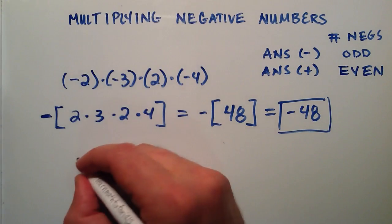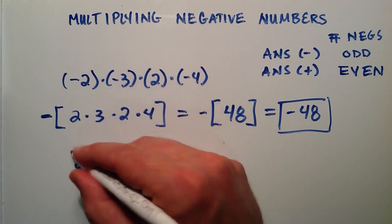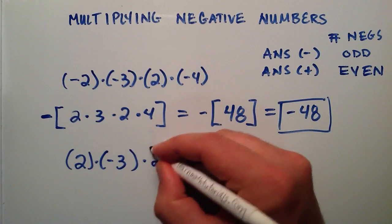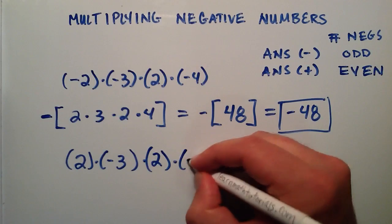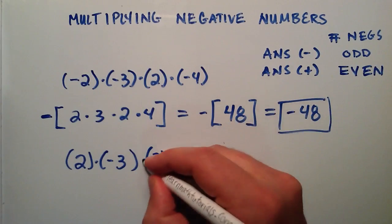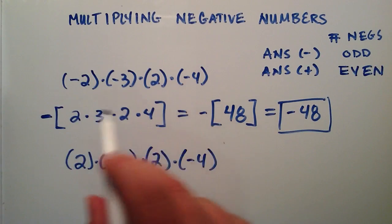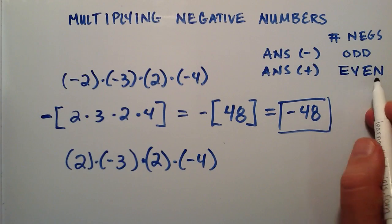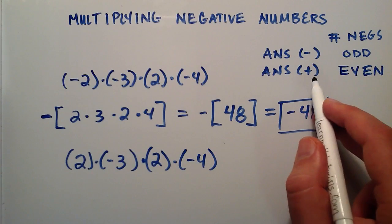So what if we had 2 times negative 3 times 2 times negative 4. This is the same thing as above, but I've changed this value. This is now a positive value. So now we count the number of negatives. 1, 2. We have 2 negatives, and 2 is an even number. So therefore, our answer will be positive.